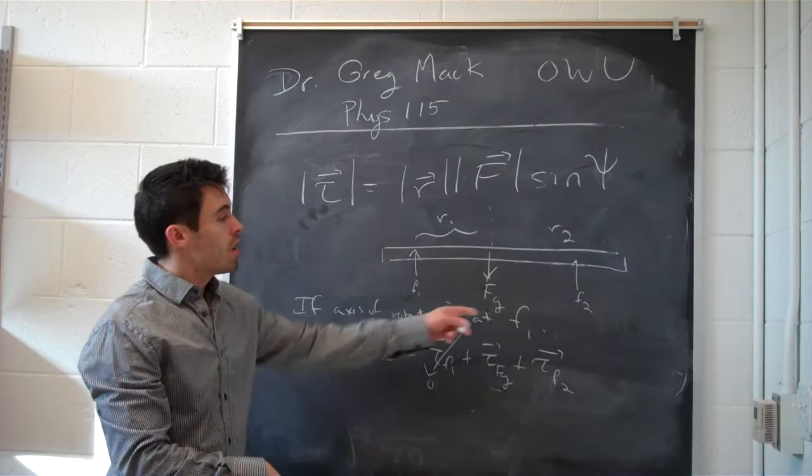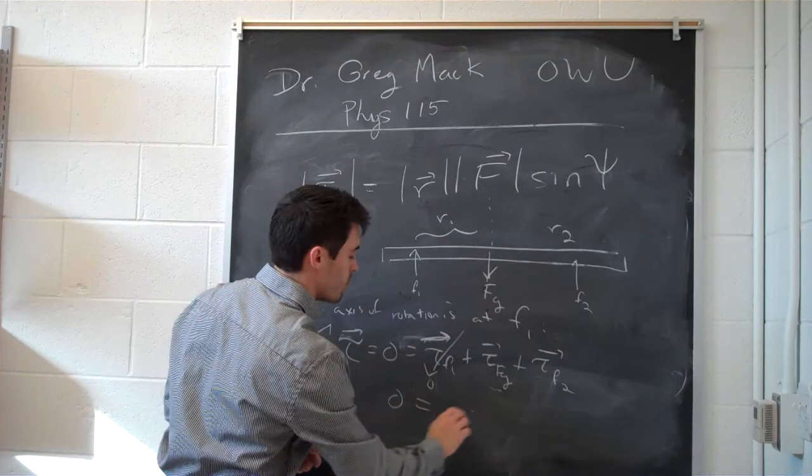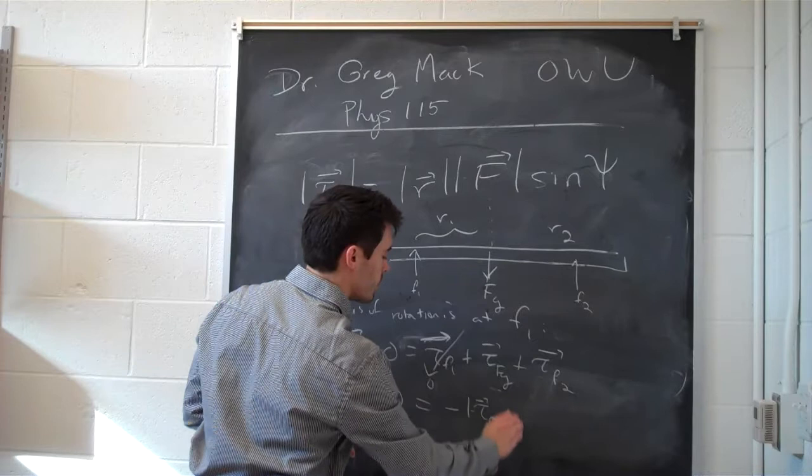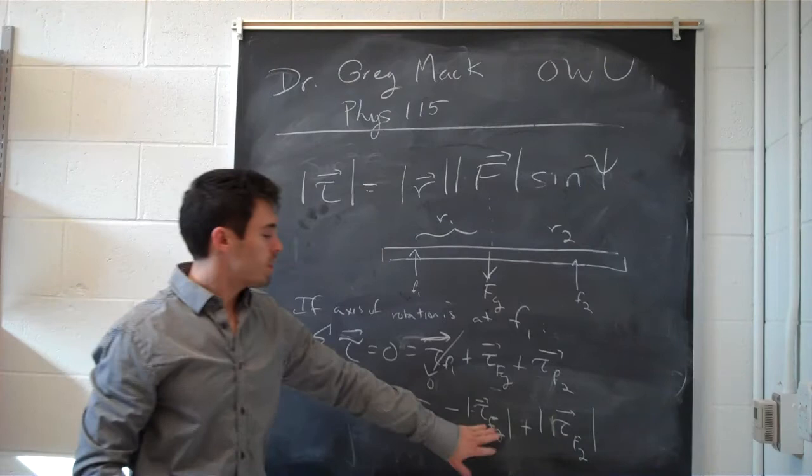For f2, fingers in the direction of r, curl them up in f2, and we know that it's going to be positive. So zero equals negative torque of fg plus the torque of f2.